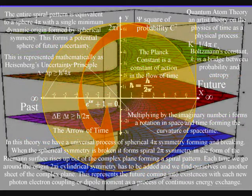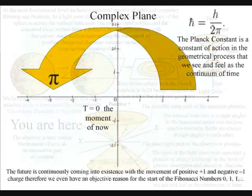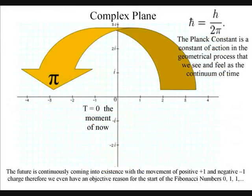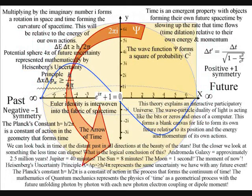This represents a process of spherical symmetry forming and breaking. When the spherical symmetry is broken, it forms spiral symmetry in the form of the Riemann surface rising up out of the complex plane, forming a spiral pattern each time we go around the origin. 2π cylindrical symmetry has to be added and we find ourselves on another sheet of the complex plane.